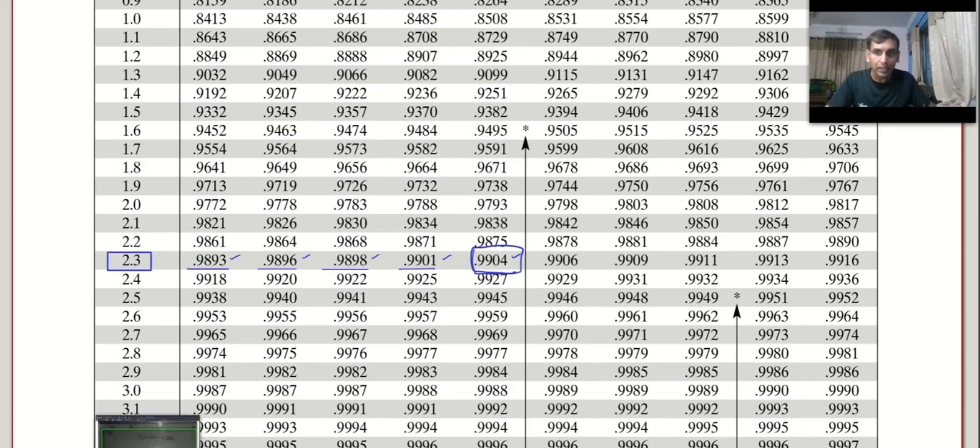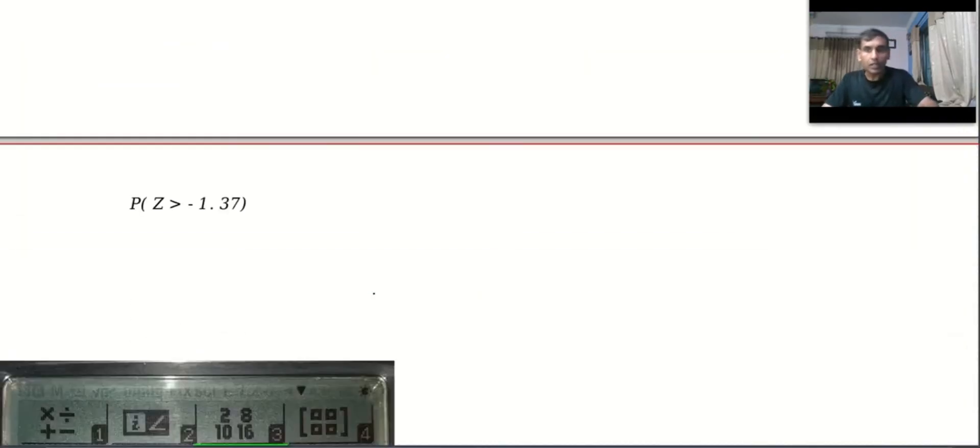Let's do one more problem and make it very clear. Suppose I want to find probability of z greater than minus 1.37. Now look at this, we are kind of allergic to the word greater than. So we have to convert it into less than or less than or equal to, because in continuous distribution both are approximately the same.